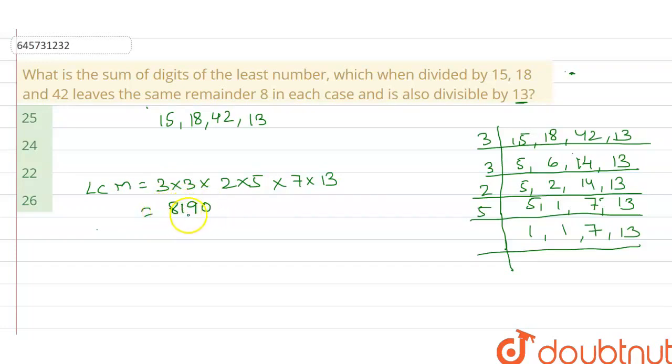Now we have to add the remainder in each case. So let the required number be X. X will be 8,190, which is the LCM and is divisible. But in this case, we have 8 as remainder, so we will add 8.